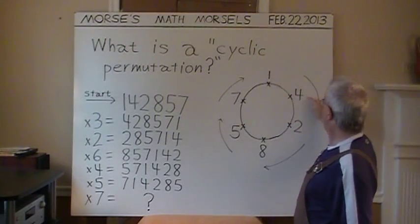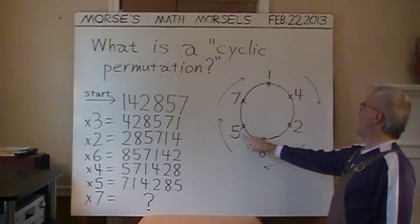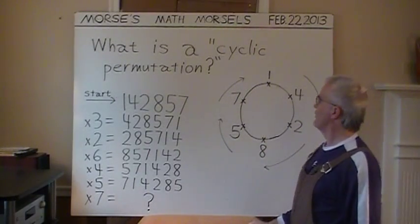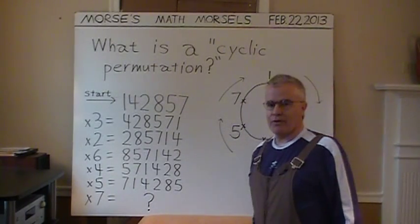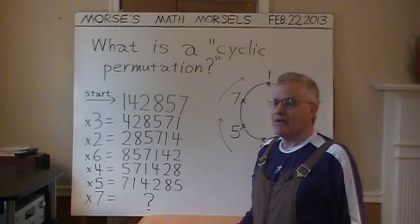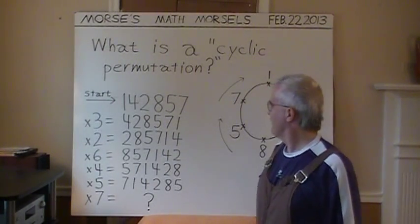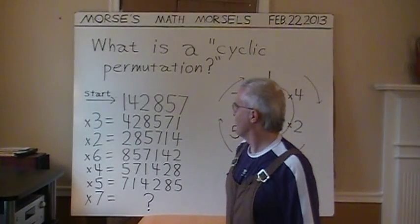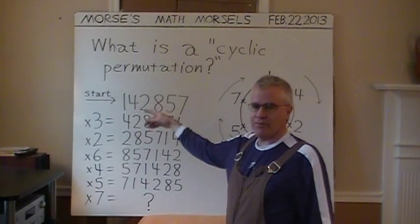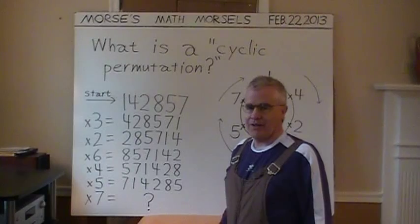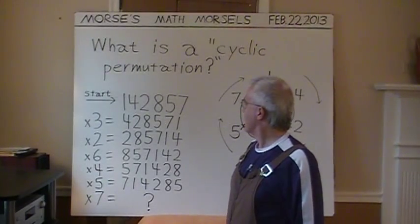I have the digits 142857 in order. The cyclic permutation, in this case, will mean shifting digits - just moving a digit from the front of the number, or the left side, to the right side of the number.